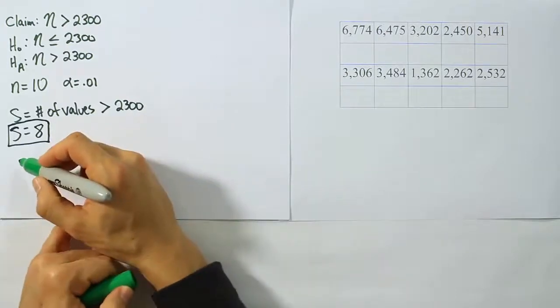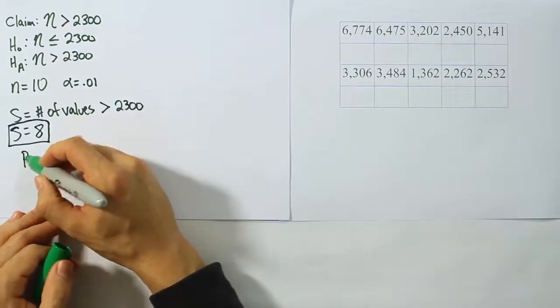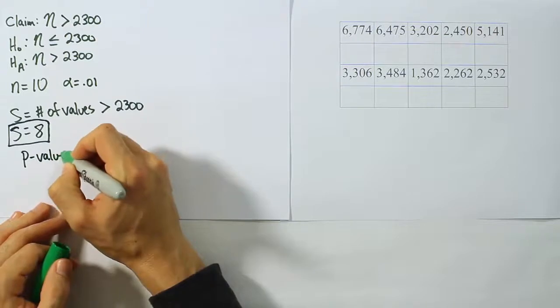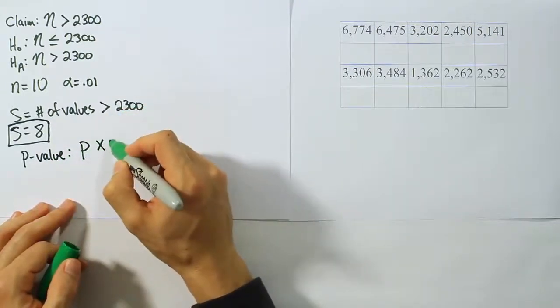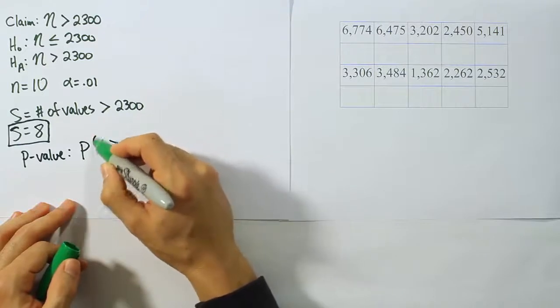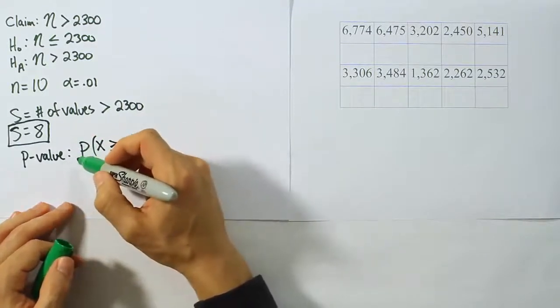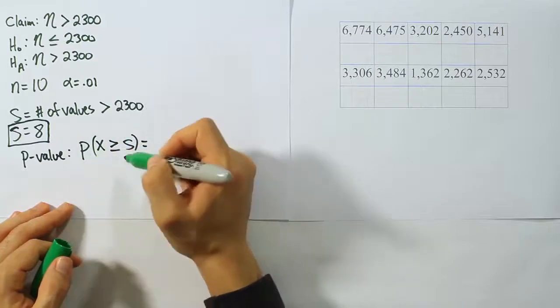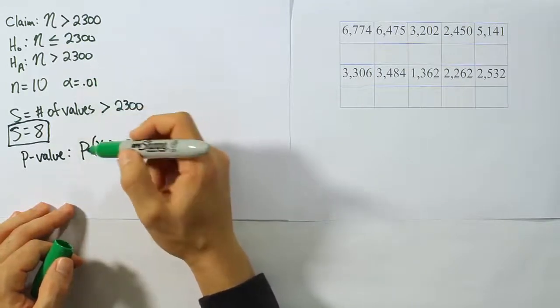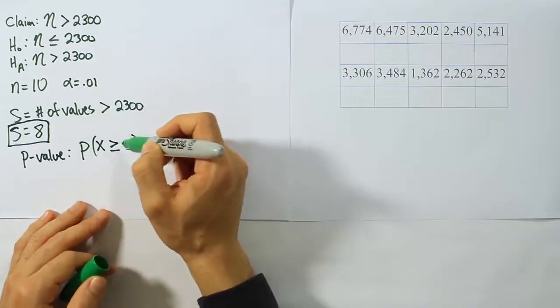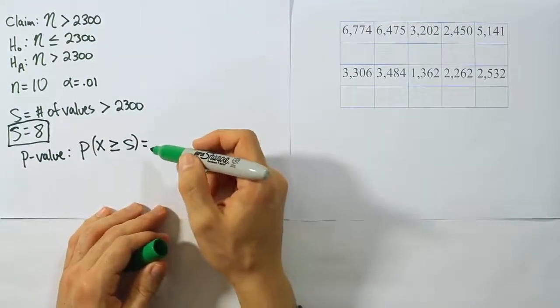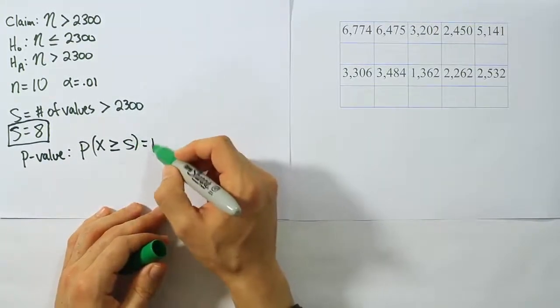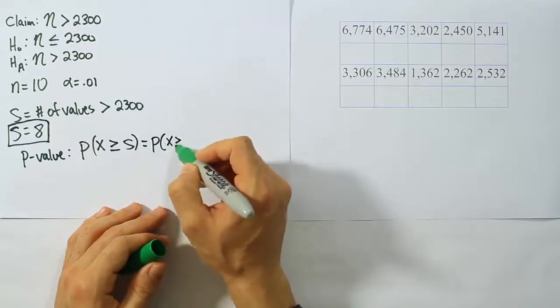Remember how we get our p-value now. Our p-value is going to be equal to the probability that X is greater than or equal to S. Now in the previous videos you saw we had a two in front, but that was because of the two-tailed test. When it's only a one-tailed test, you just do the probability that X is greater than or equal to S. That's all you do. You don't have to worry about the two out in front.